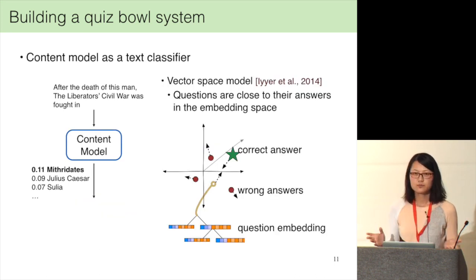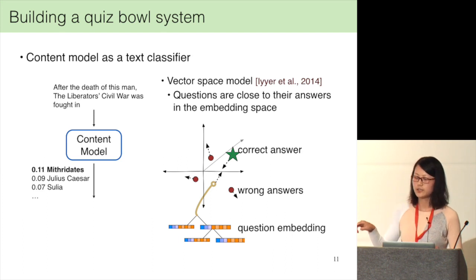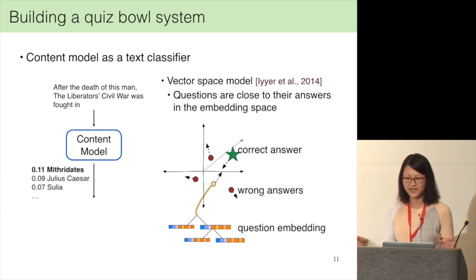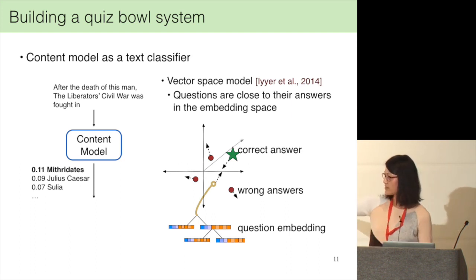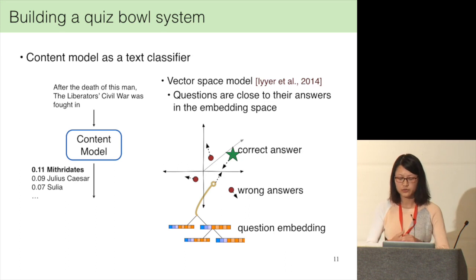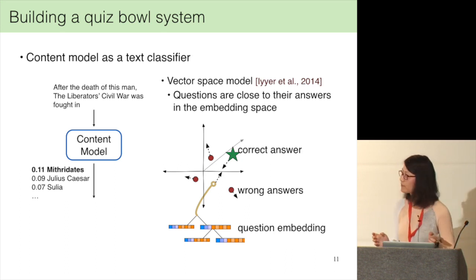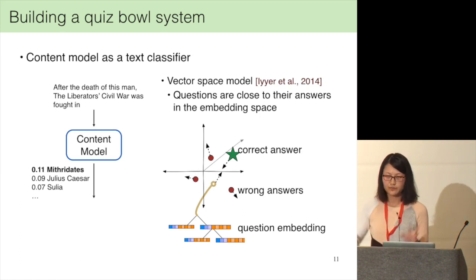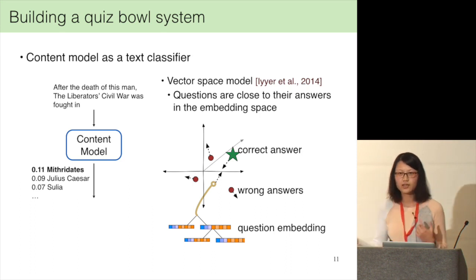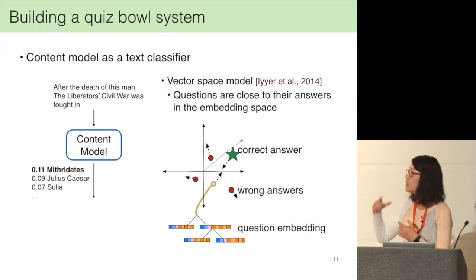For the content model, we frame this as a text classification problem. The input is text from questions and we assume a finite set of answers to predict. We use a vector space model — mapping both questions and answers into the same embedding space. The question can be embedded using a recursive neural network, LSTM, or continuous bag of words. During training, the loss function encourages the question embedding to be close to the correct answer embedding and away from wrong answer embeddings.